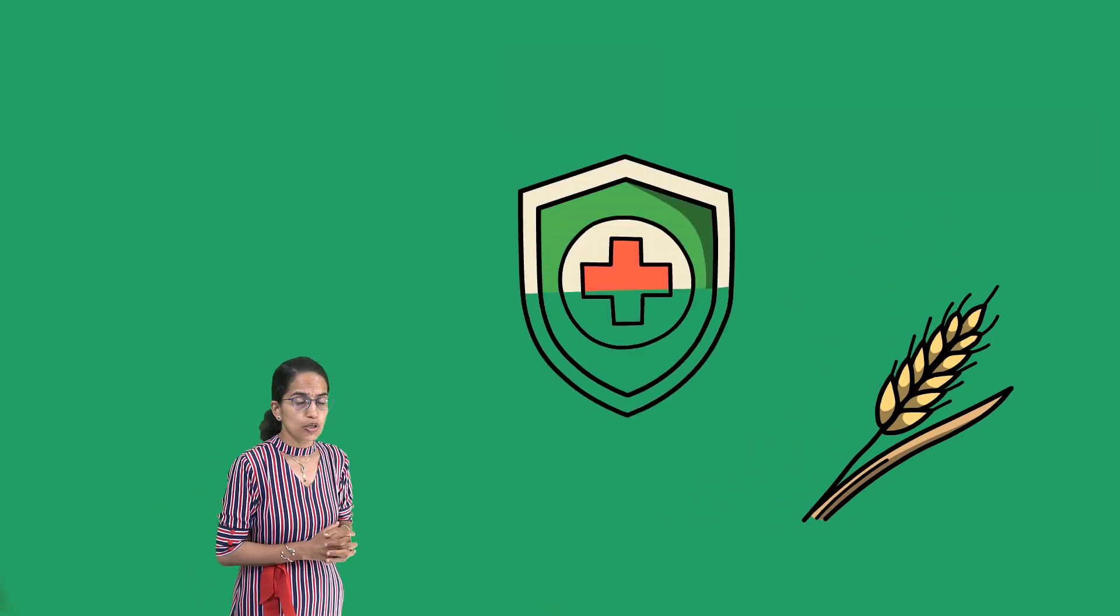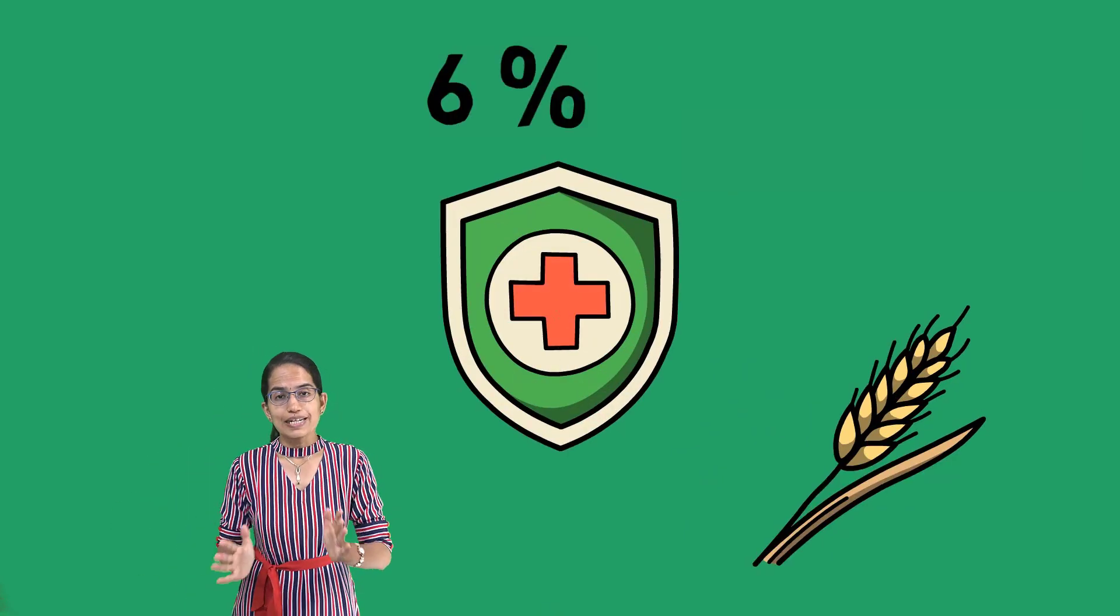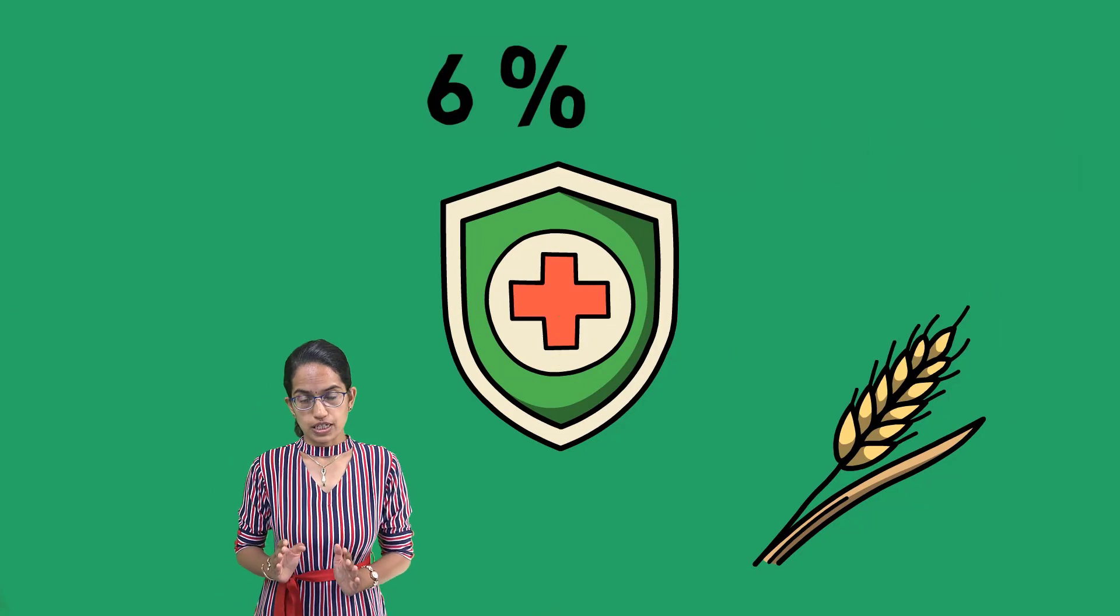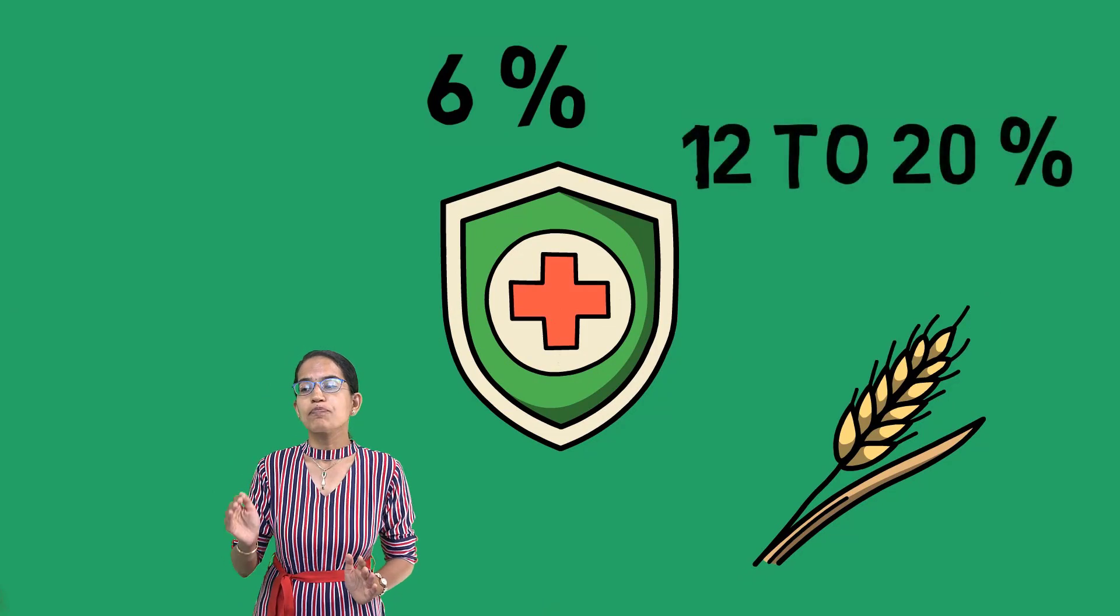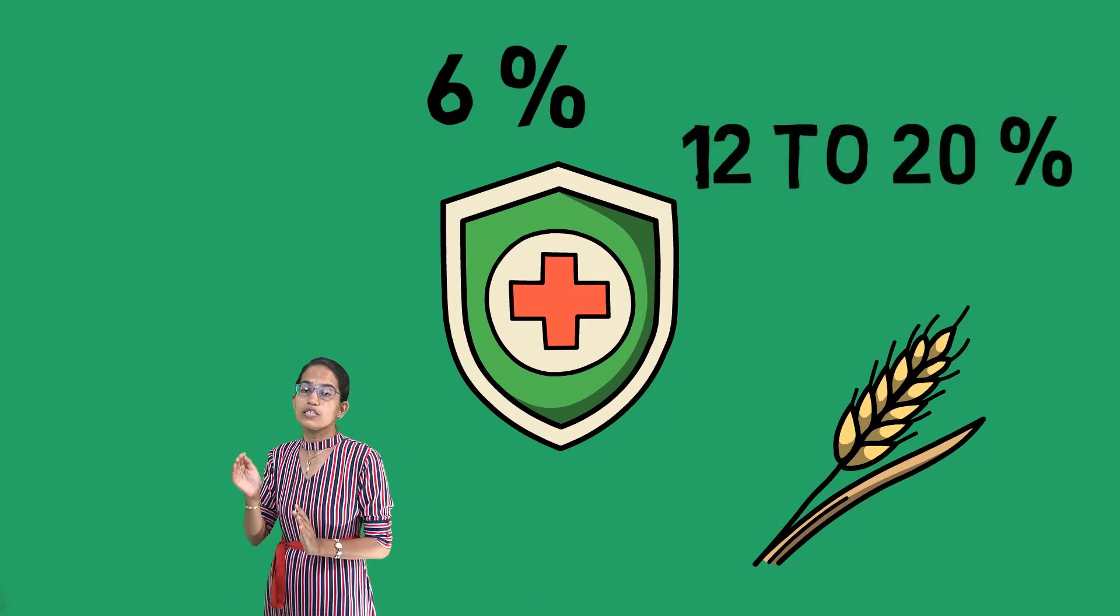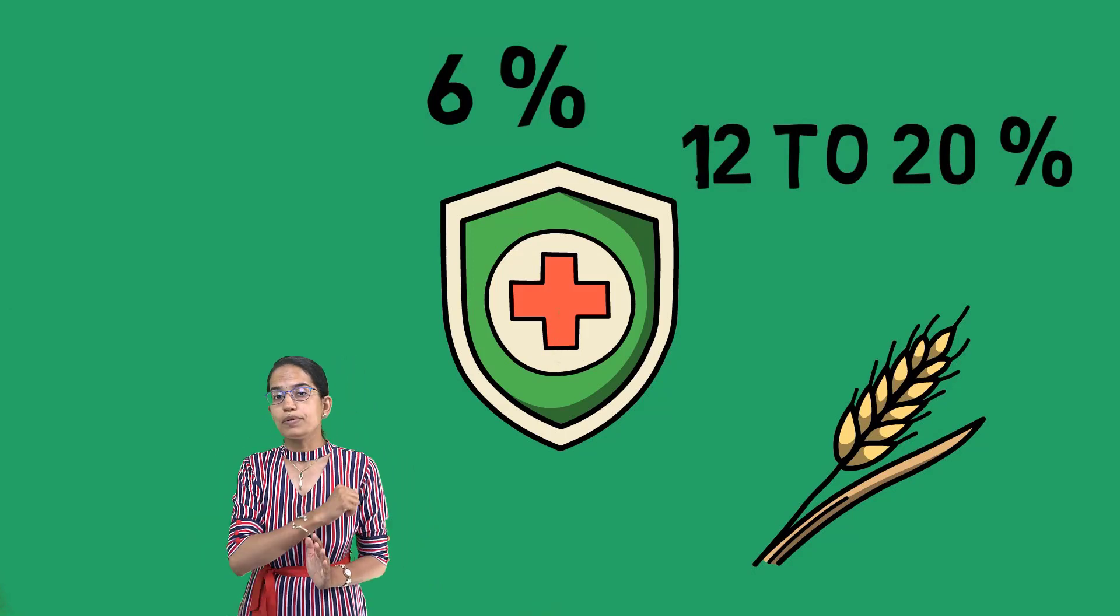Now when FCI is procuring the grains, the limit is 6% shriveled grains. However, this time the percentage of shriveled grains were 12 to 20%, which was a significantly higher percentage.